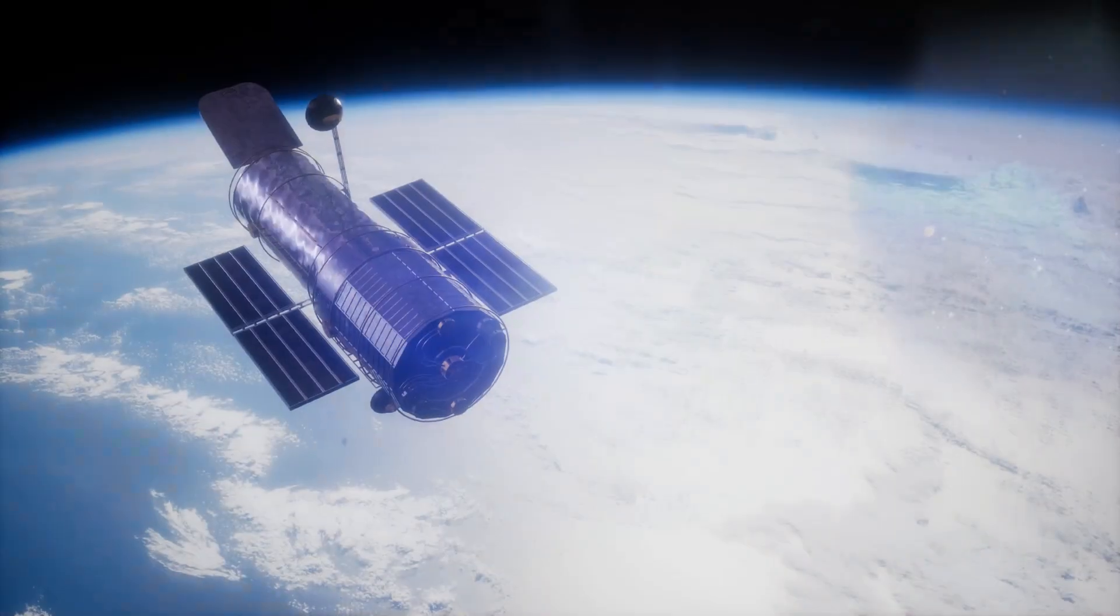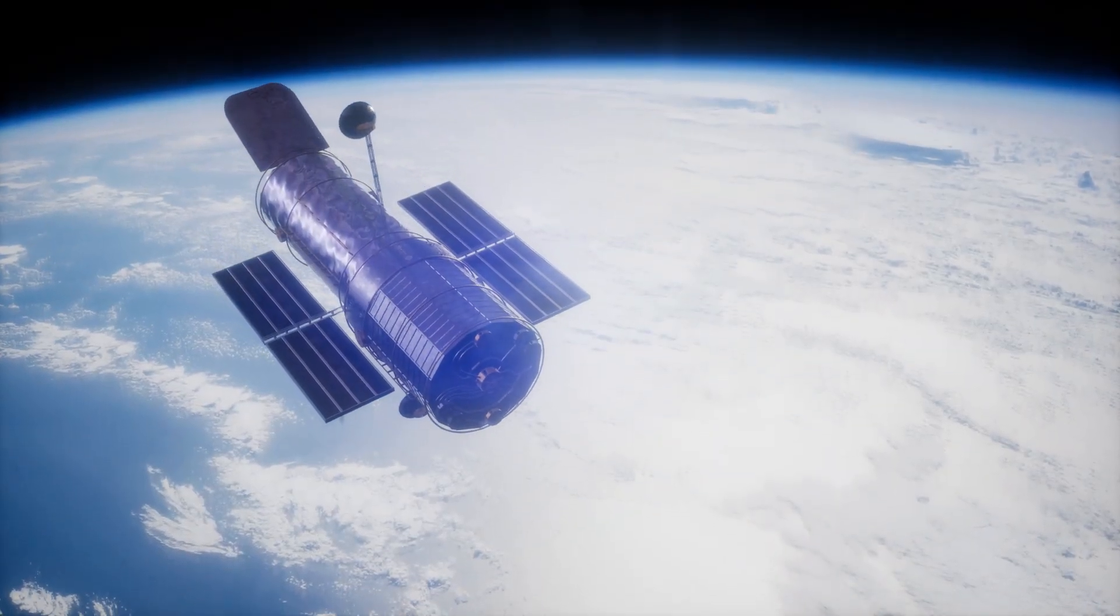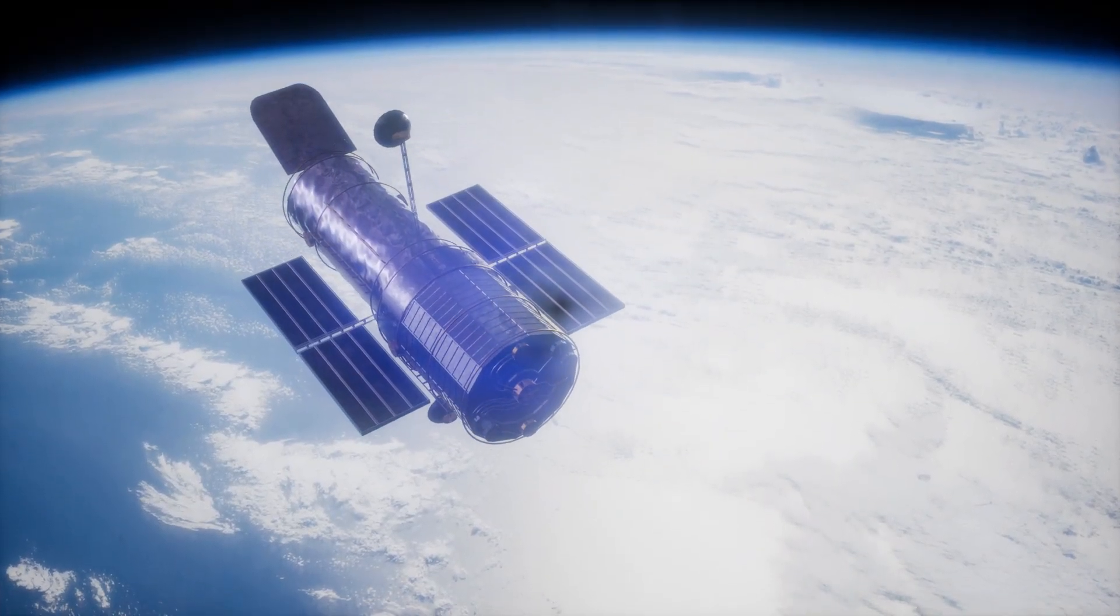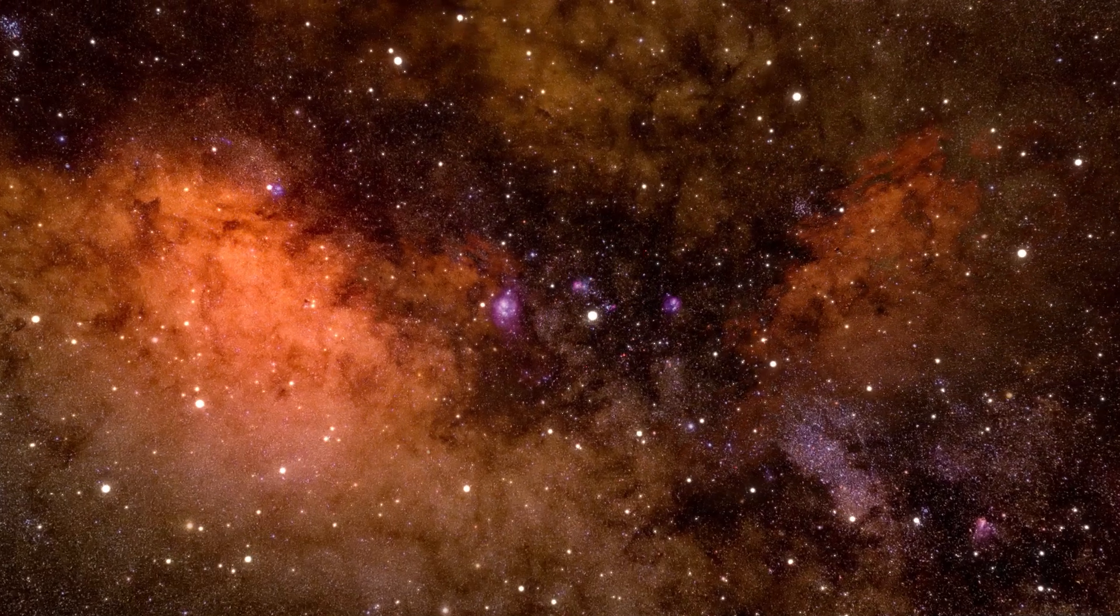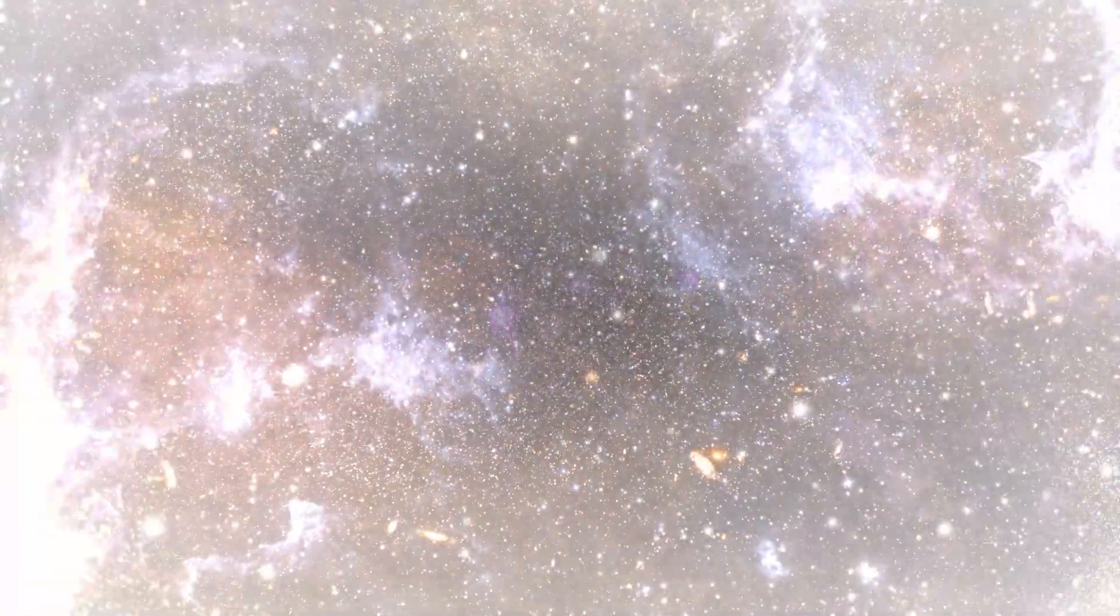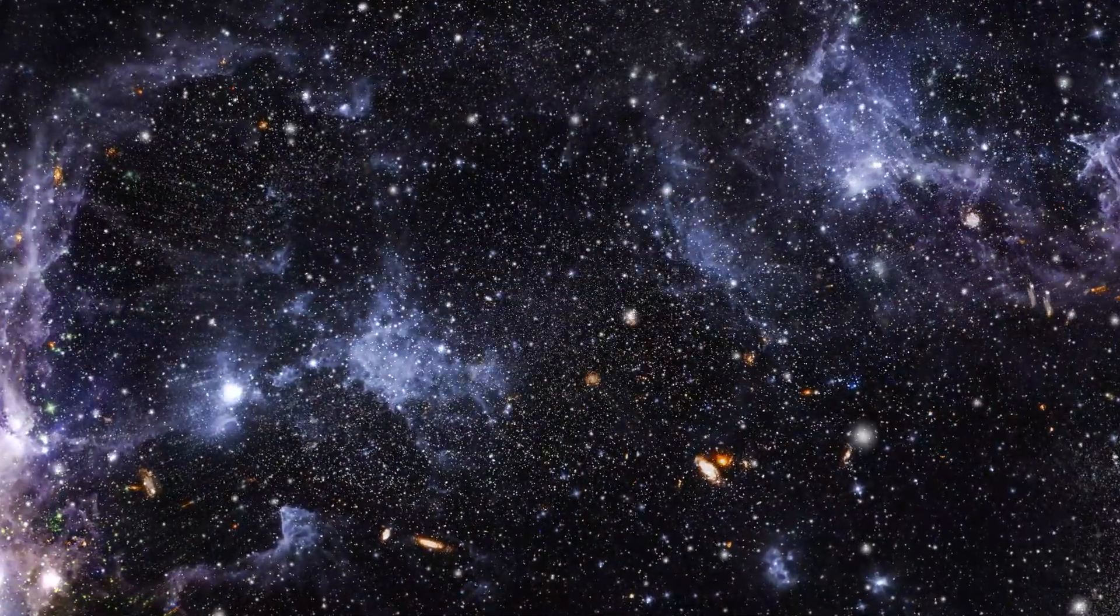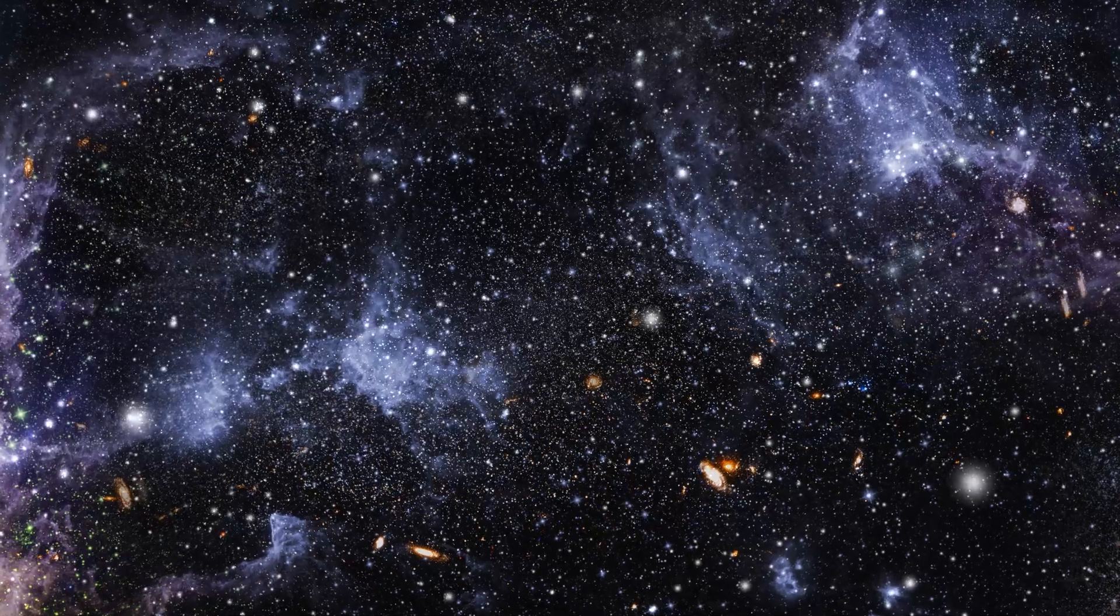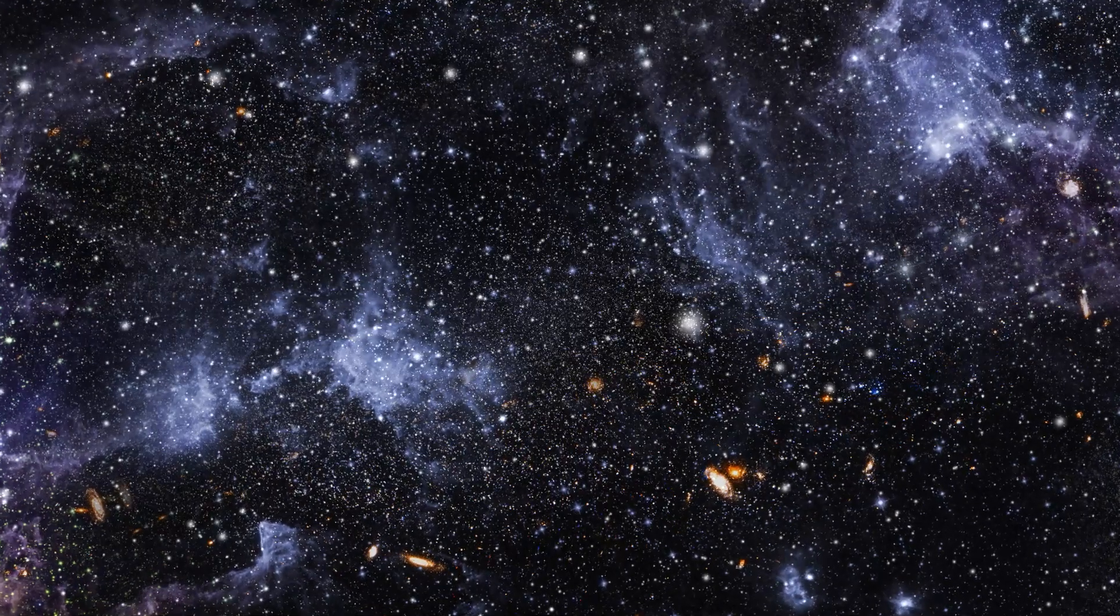While the Hubble Space Telescope necessitates extended observation periods to image these fainter stars, and Gaia primarily tracks the trajectories of globular clusters without revealing much about the faint stars, Euclid's wide field of view empowers it to capture the entire globular cluster's image within a single hour of observation. The presence or absence of faint stars at the outer boundaries of globular clusters carry significant implications for our comprehension of the distribution of dark matter.